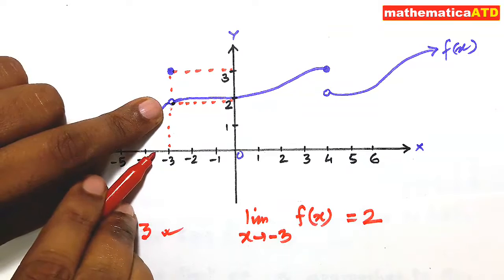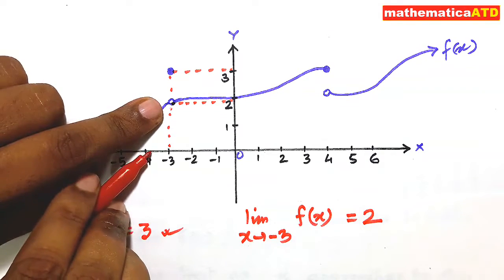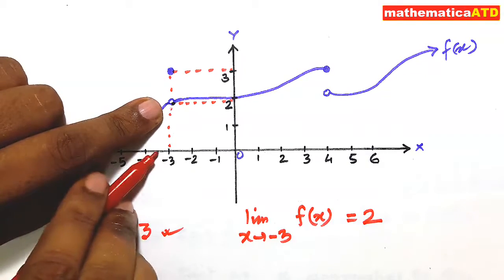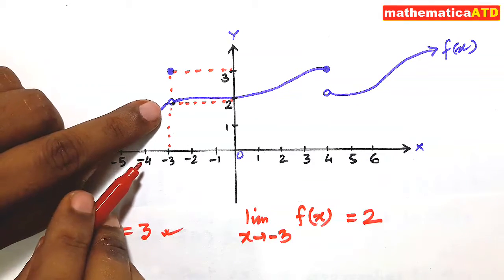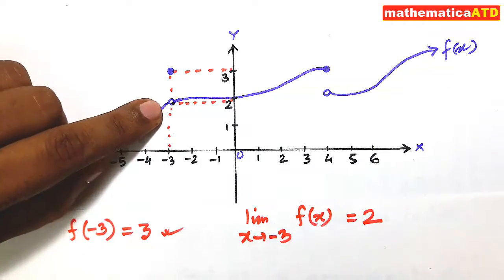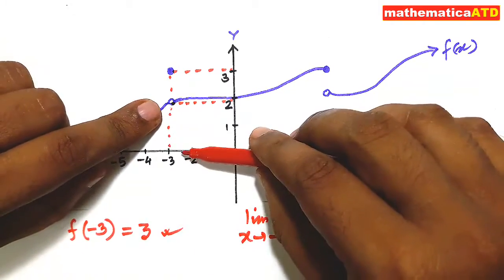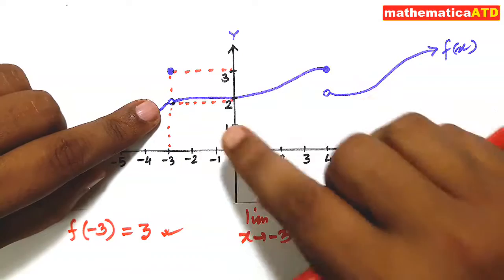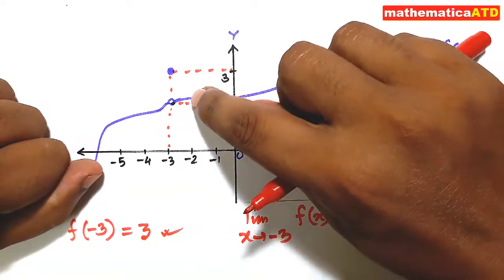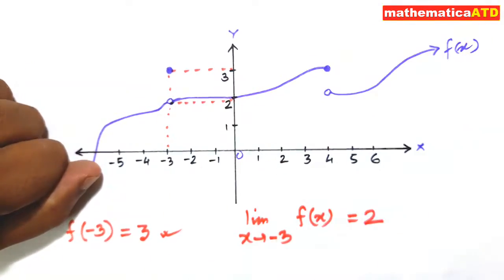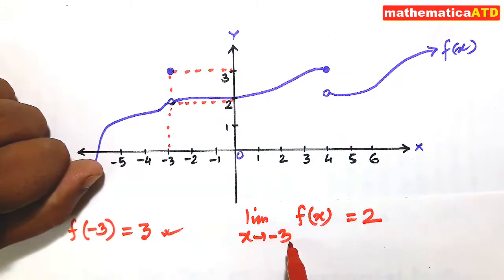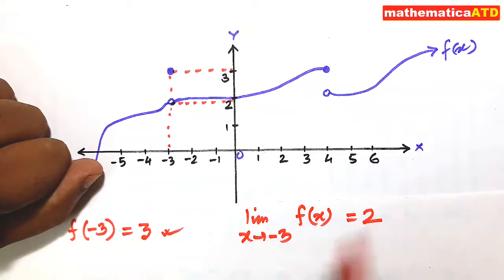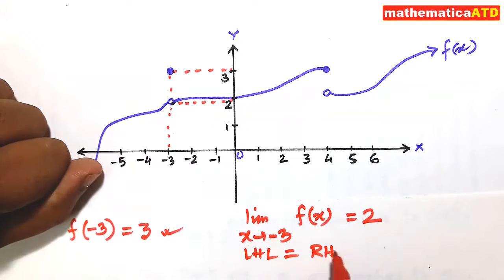So the left hand limit (LHL) is 2. When proceeding from the right side of -3, on this graph we are also proceeding to the ordinate value 2. So limit as x tends to -3 from the right is also 2. Therefore LHL = RHL = 2.